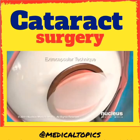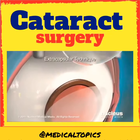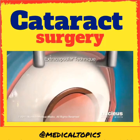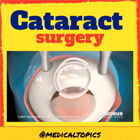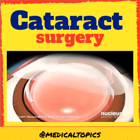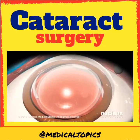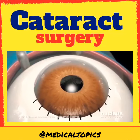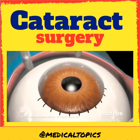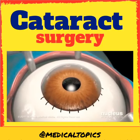Extracapsular technique: in this procedure, the incision made near the cornea is large enough to remove the cataract in one piece. Again, an artificial lens is inserted to replace the natural lens. Recovery from this type of cataract surgery is usually slower because the incision is larger. This procedure does require stitches; however, the stitches rarely need to be removed.